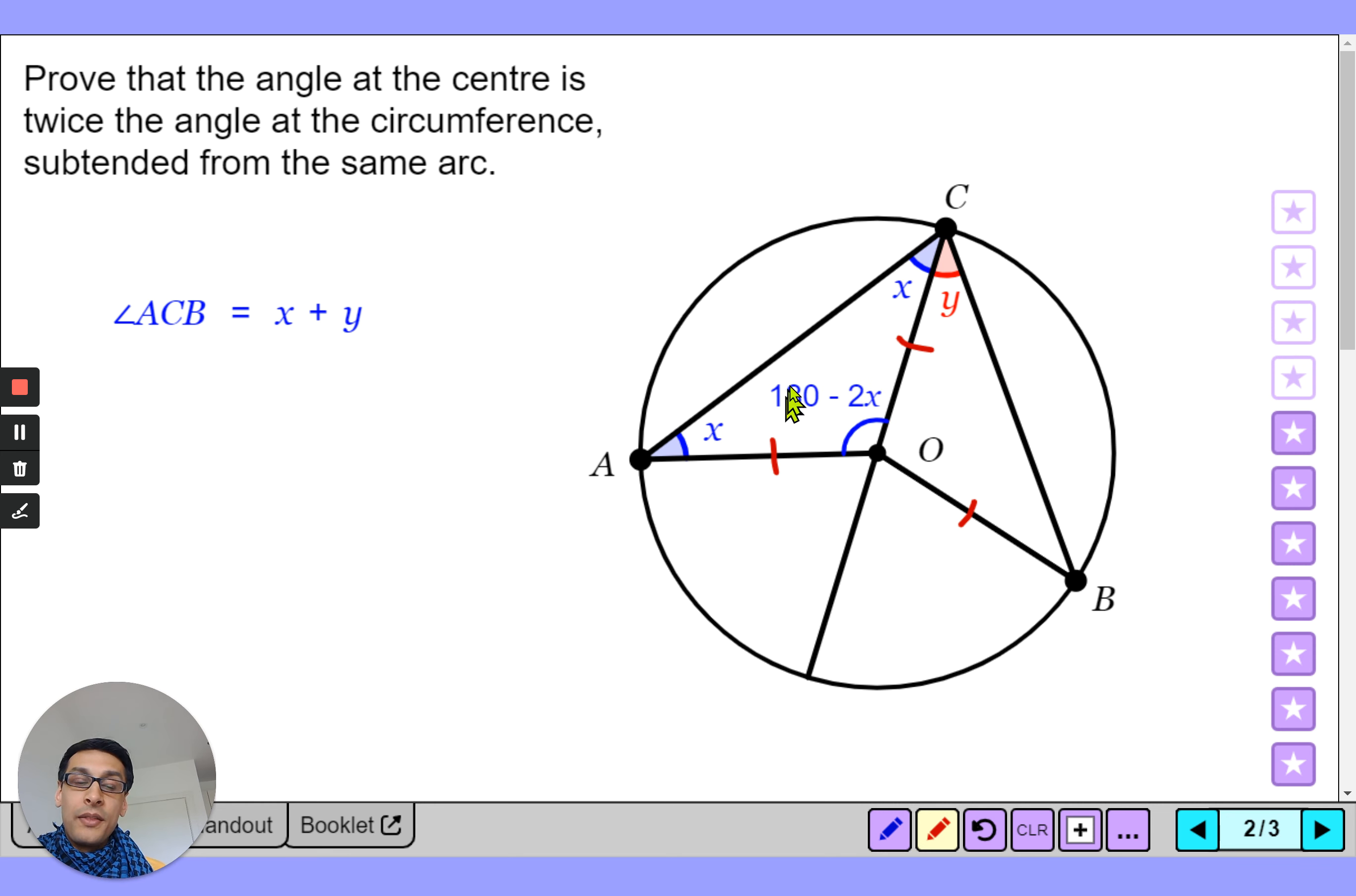So that means that this angle in the middle, so angle AOC, this specific one is going to be 180 take away the two other angles in that triangle. But we can also say that this angle here has to be 2x because if we focus on just this bit of the shape it's just a straight line and you can see if that angle there is 180 minus 2x, well to make it equal 180 I have to add 2x.